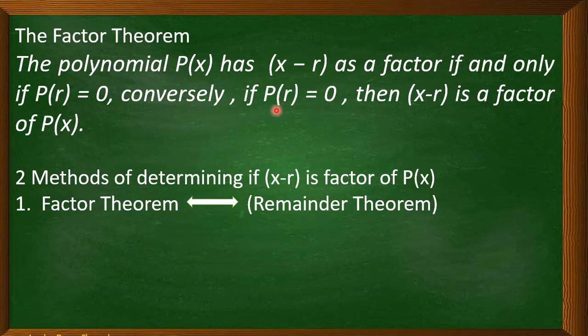Remember, in my previous video, I discussed the remainder theorem. And p of r is just equal to the remainder. Meaning to say, if the remainder is equal to 0, then the binomial in the form of x minus r is a factor of a polynomial p of x.